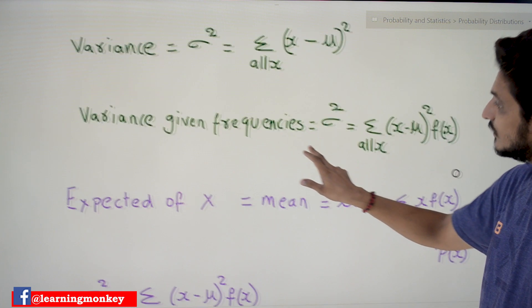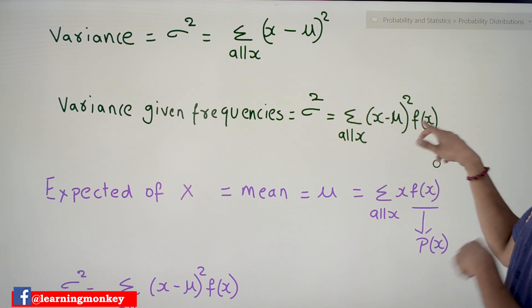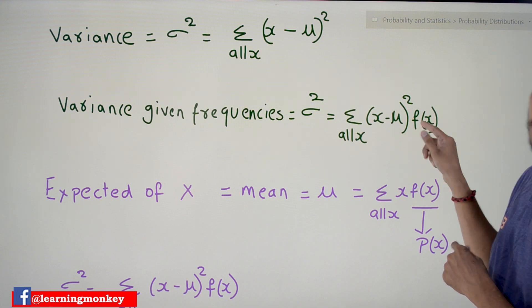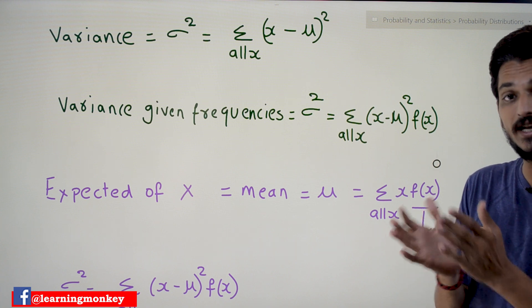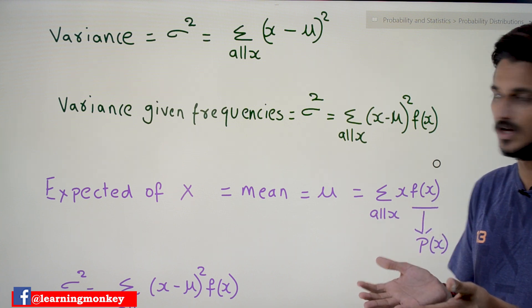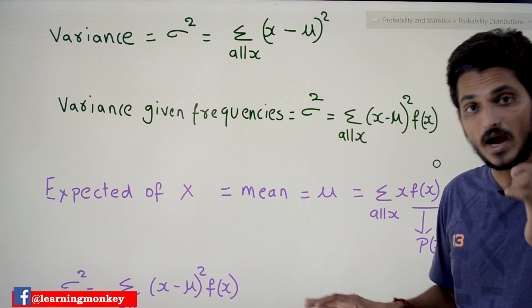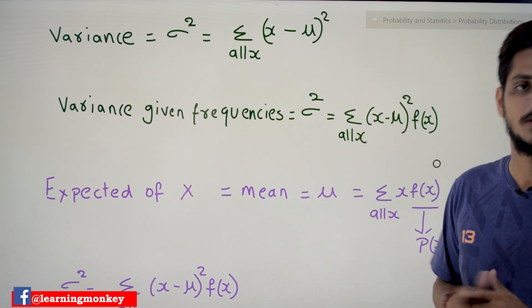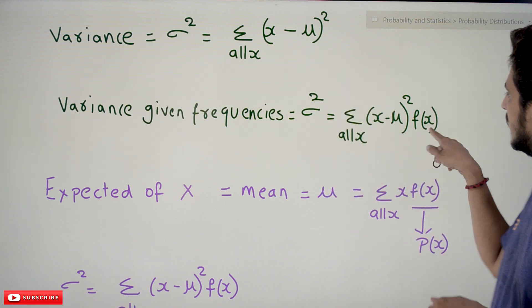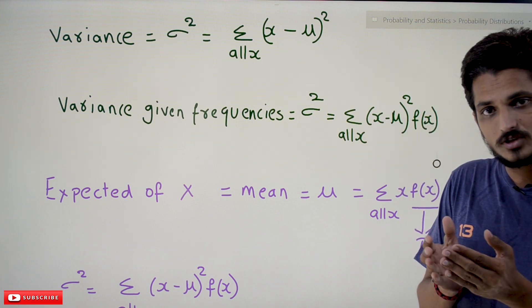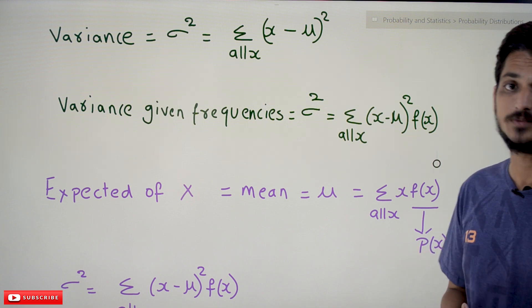Similarly, if frequency values are provided, sigma squared equals the sum over all X of (X minus mu) squared times F(X), where F(X) means the frequency values. This is how we use it when the data is provided with frequency values. This same equation is used for probability distributions to find variance values, because in our last class we discussed that probability values act just like frequency values.